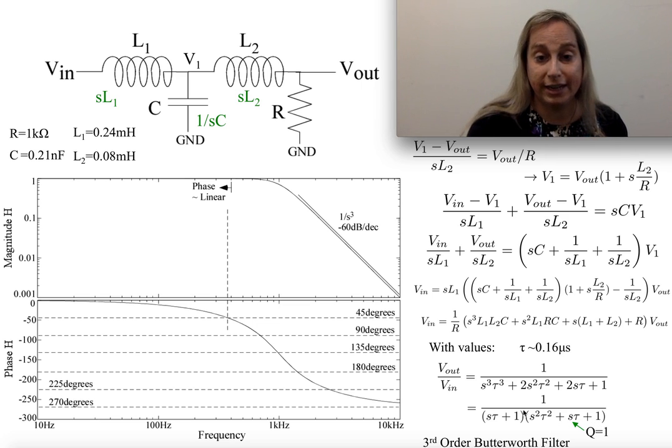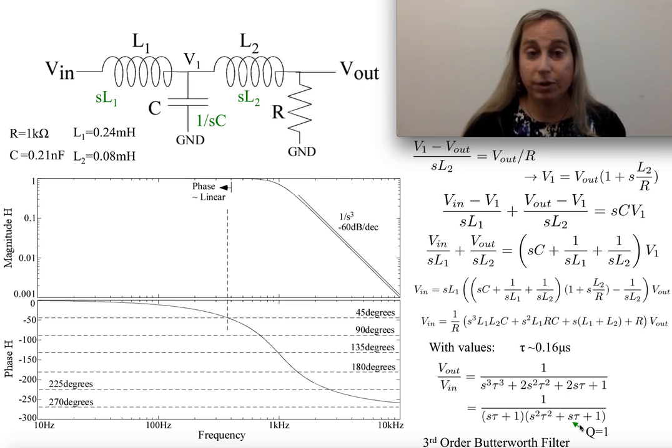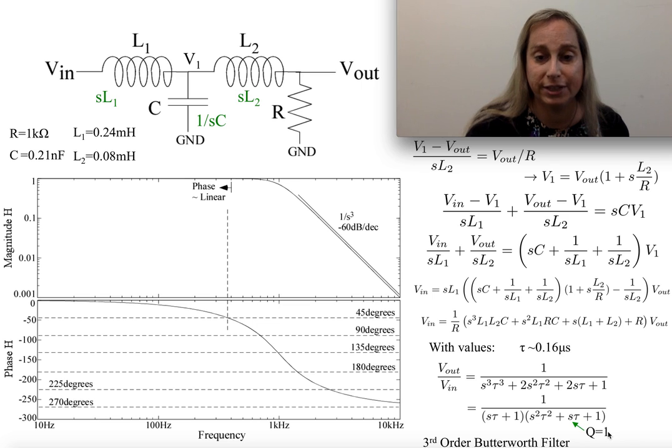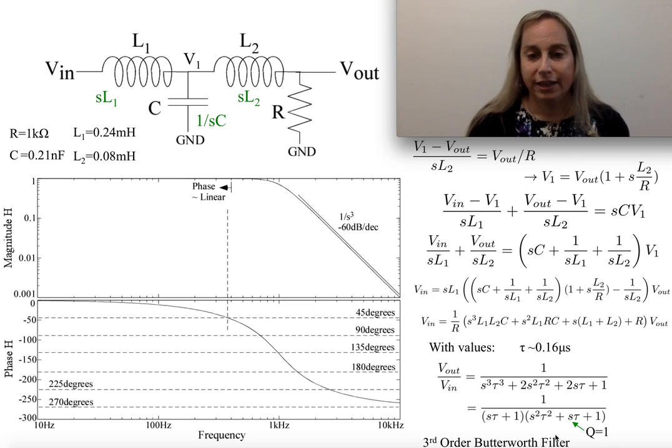This, of course, means that I now have a first order term and a second order term here with a Q equal to 1. So you kind of get the roots. We kind of can see what would happen with this response. And what's really interesting is that this then gives me what is typically considered a, this actually has a particular form. This is actually a Butterworth filter. It's a third order Butterworth filter. It's kind of cool that you get this particular response.